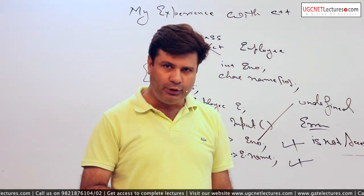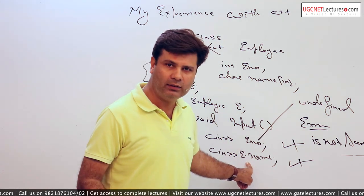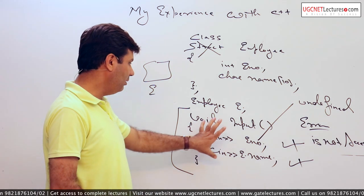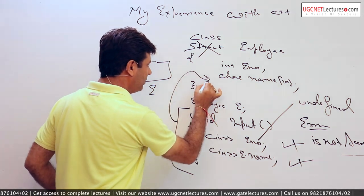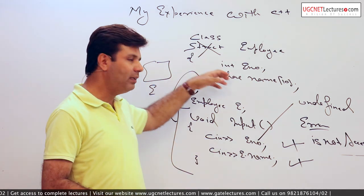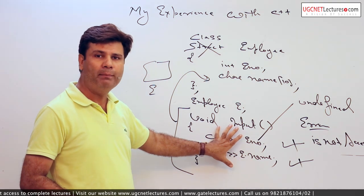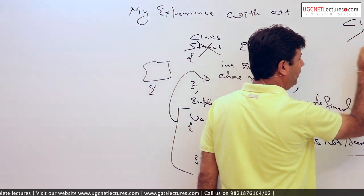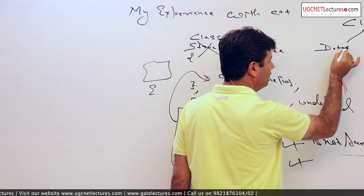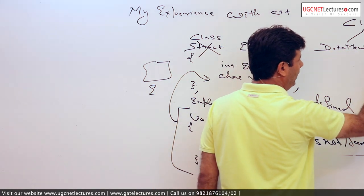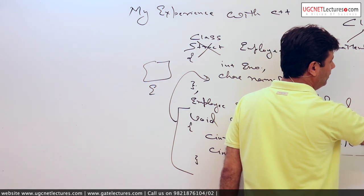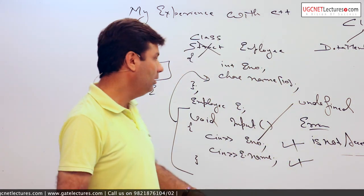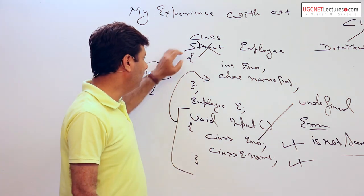Now the question arises: if it is private, you cannot use it here — how will you use it? In that case, I need to write the entire function within the class. I need to define it within the class. At that time, it will be a member function of the class. So in short, a class is made of two things: data members and member functions. A structure, on the other hand, contains only variables.